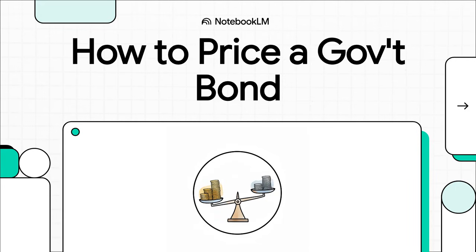Welcome to The Explainer. Have you ever looked at the price of a government bond and wondered where that number actually comes from? Well, it's not some big mystery. It's just math. And in the next few minutes, we're going to break down that math step by step so you can see exactly how it works.